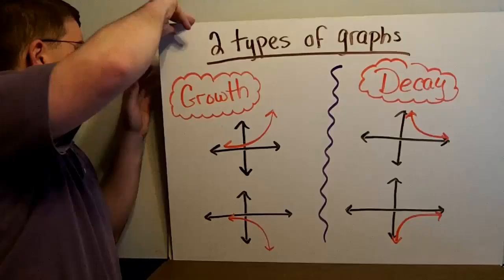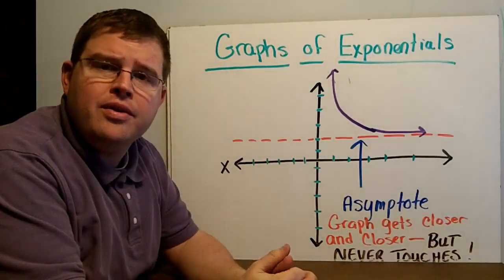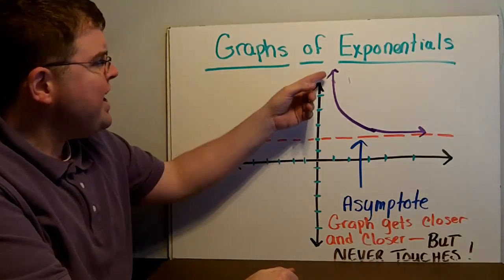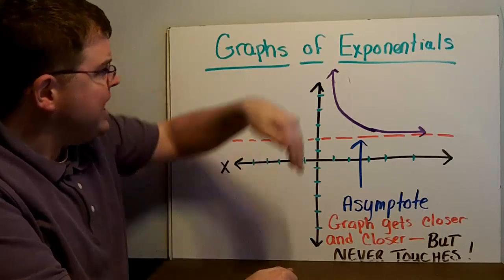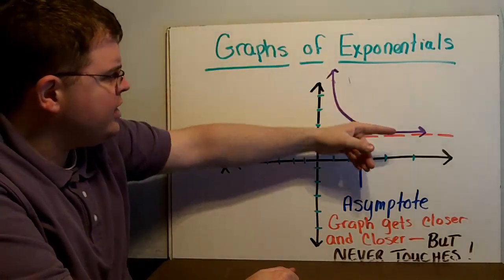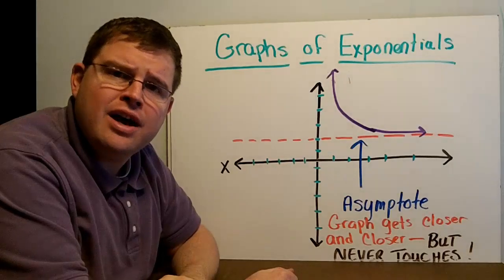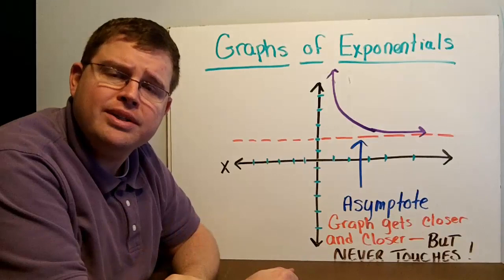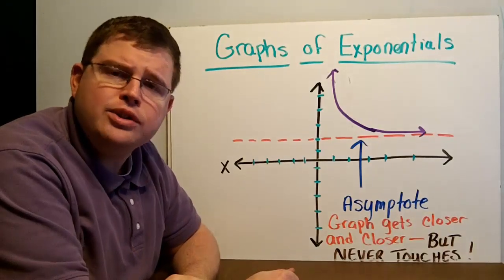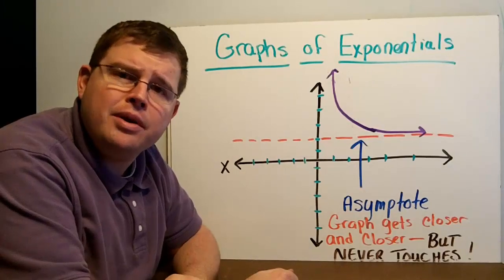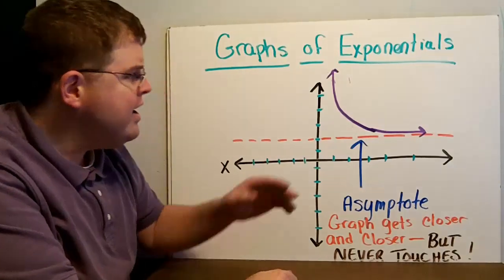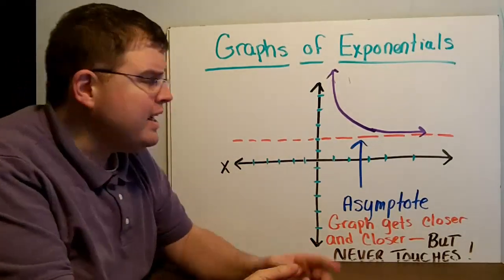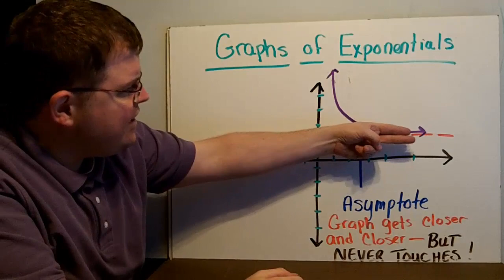The graph of an exponential function has several features we want to be familiar with. Most importantly is this red dashed line. Here we have a decay function, and notice it starts high and gets lower and lower, closer and closer to that red dashed line. We call that red dashed line an asymptote. An asymptote is simply a line that the graph gets closer and closer to, but it never really touches it — it never gets there.